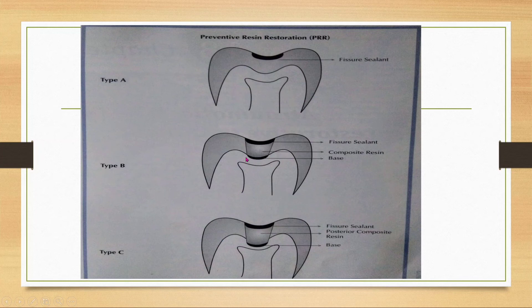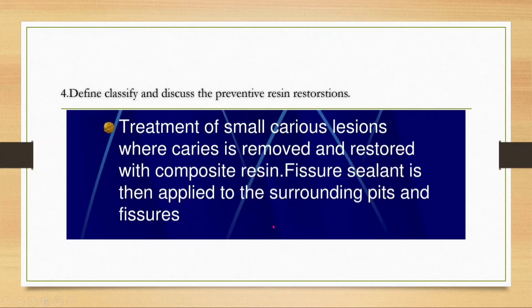In Type A, we apply on the enamel only. In Type B, it involves dentine, so we place a base, then composite, with fissure sealant on top. In Type C, there is more tooth loss, so we place a base, then a posterior composite for greater strength, and apply fissure sealant over that.